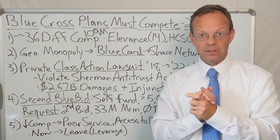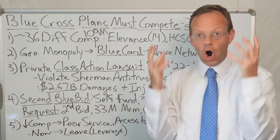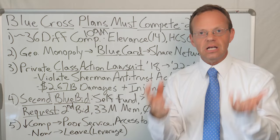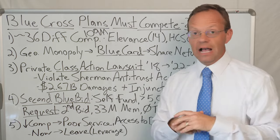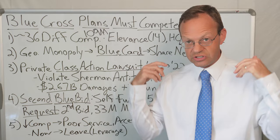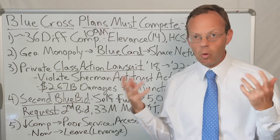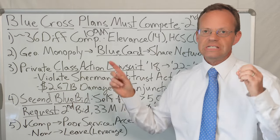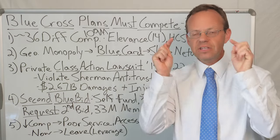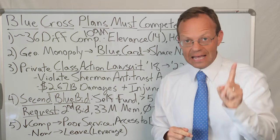And anytime you have capitalism without competition, you end up having harmed customers. The customer loses when there is a lack of competition. And so the customers, the employers, they sued the Blue Cross plans and they sued for damages. And they were awarded in a settlement $2.67 billion in damages that the Blue Cross plans have to pay the employers and the employees that are on those plans.